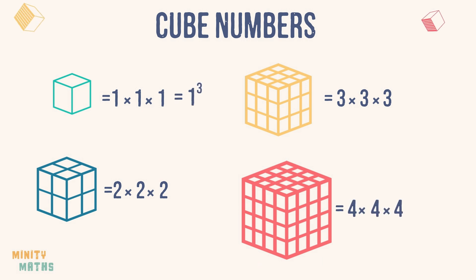We can use the power 3 as shorthand. For example, we can write 3 times 3 times 3 more simply as 3 cubed.